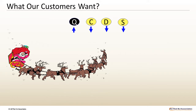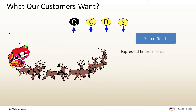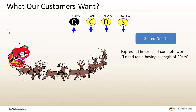Let us understand what stated needs are. They are ones which are actually expressed in terms of concrete words — for example, 'I need a table having a length of 20 cm.' This need will be satisfied if you really get the required length. This is a stated need satisfaction.